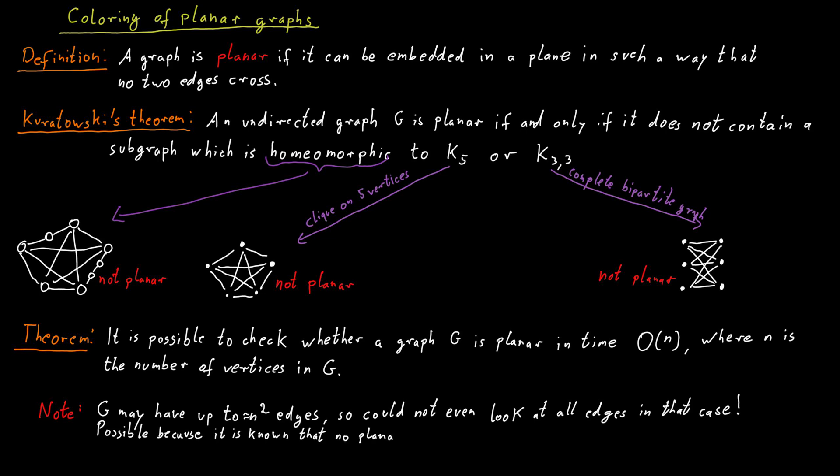So if a graph has more than 3n edges where n is the number of vertices of the graph, then it cannot be planar. Therefore, if we have a graph that has a super linear amount of edges, we already know that it's not planar and we actually don't need to do any extra checking.